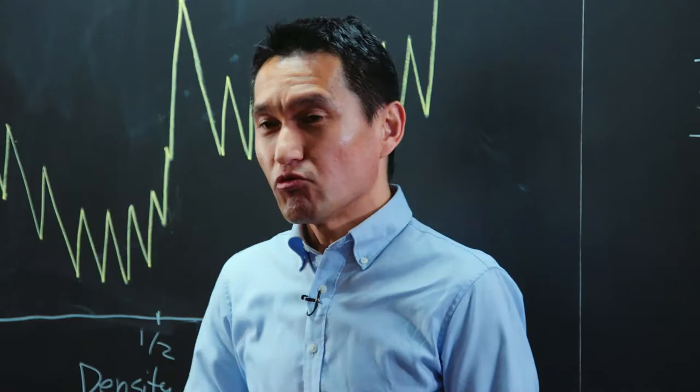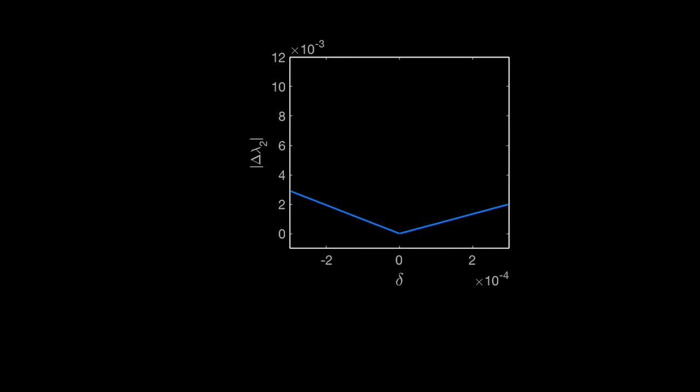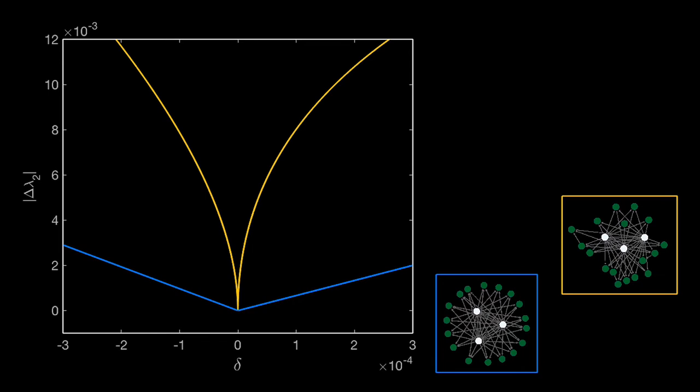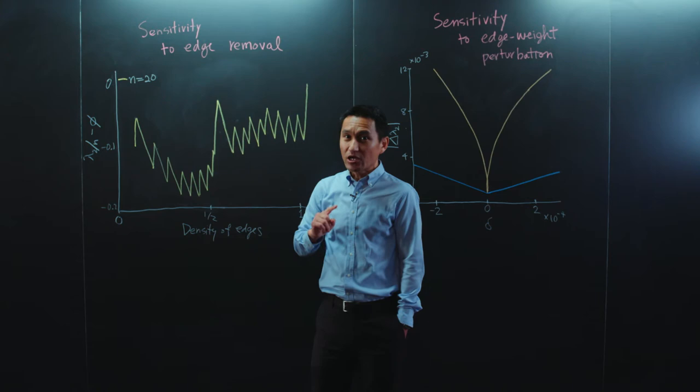What if, instead of the density of edges, we perturb the weights of the edges? In some networks, the algebraic connectivity depends linearly on perturbation strength. In others, it can exhibit very pronounced singular behavior. And in fact, it is more prevalent in optimal networks.